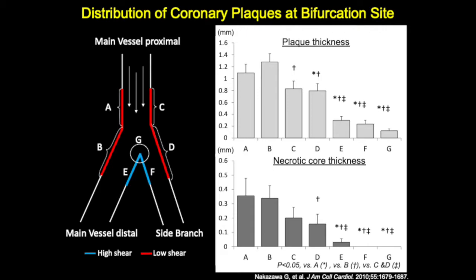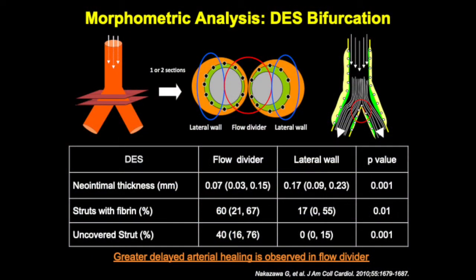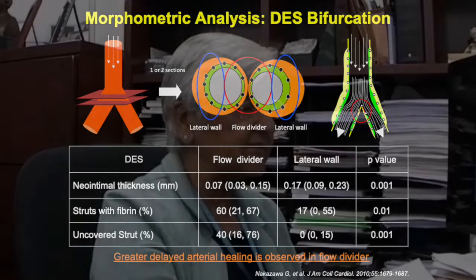I'm going to show you what happens when stents are deployed in these regions. We have shown that where stents are more likely to form thrombosis: neointimal thickness is least in the floor divider region compared to lateral. Struts with fibrin are more likely seen at the bifurcation floor divider, and uncovered struts are more commonly seen at the carina compared to the lateral wall.